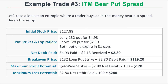In the third example, a trader buys an in-the-money bear put spread, where both the long put and short put are in the money at trade entry. The initial stock price is $127.88. We buy the 132 put for $4.93 and sell the 128 put for $2.13, both expiring in 31 days. Net debit is $2.80, break-even is $129.20. The spread is $4 wide, so maximum profit potential is $120 (four-dollar width minus $2.80 debit times 100) and maximum loss potential is $280.